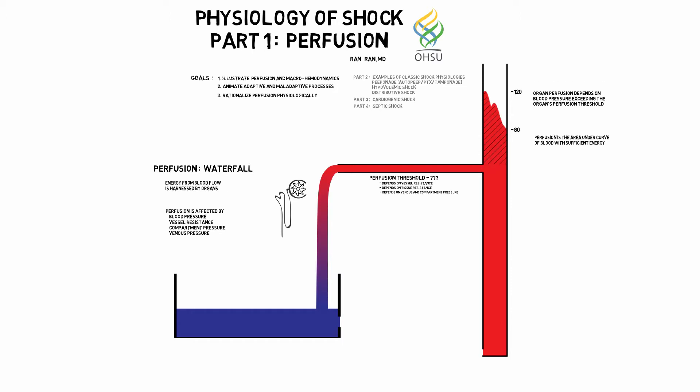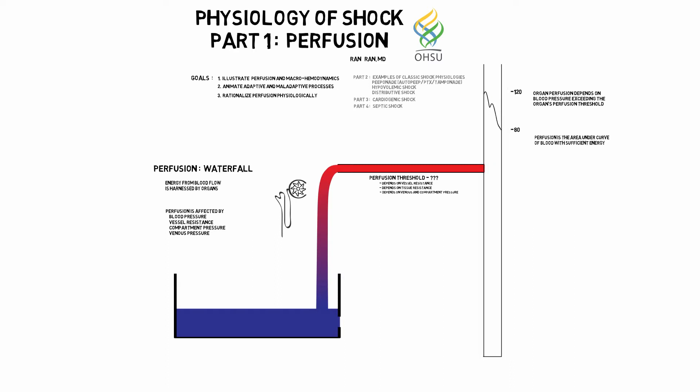You can decrease the area under the curve by decreasing systemic blood pressures, but it can also be decreased by low cardiac output in the face of high systemic vascular resistance.